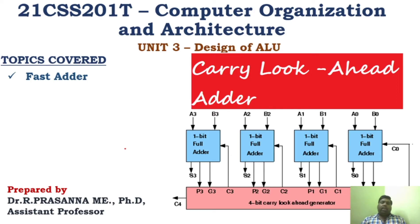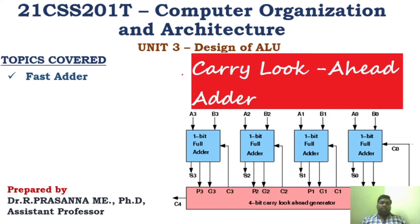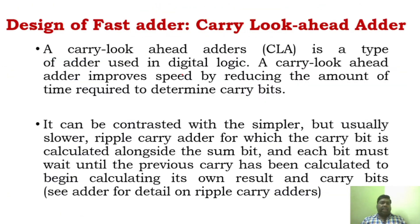This is a very important concept in this unit. You have to explain the logic of the carry look-ahead adder and why it is called a fast adder — we have to prove that. The carry look-ahead adder is called a fast adder because it overcomes the drawback of a ripple carry adder. The main drawback of the ripple carry adder is that the carry propagates from LSB to MSB, causing more propagation delay.